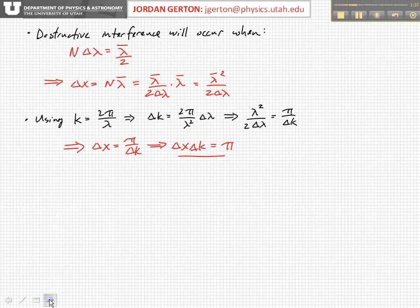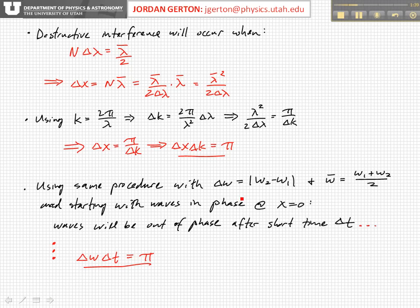We can do the same procedure using the temporal part of the wave. So if we basically start with the waves in phase at x equals zero, now we basically look at a particular point in space and now we let time run. Then we can follow the same procedure and end up with an equivalent expression for the frequency and time.